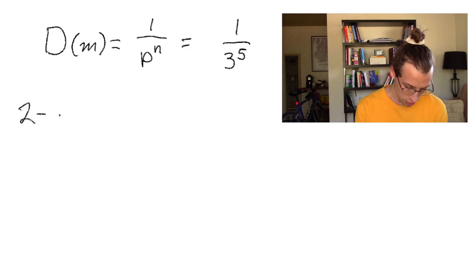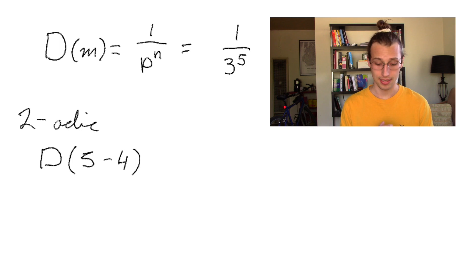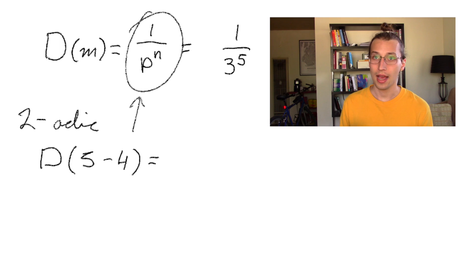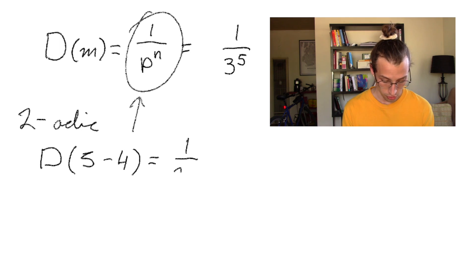So let's look at a 2-adic system and ask: what is the distance from 5 to 4? In a p-adic system, if you want to know the distance from one number to another number, what you do is first what you'd expect - you take the absolute value of the difference of those two numbers. But that's not your answer. In a p-adic system, what you would then do is plug that number into 1 over P to the N. So 5 minus 4 is 1. And now we need to ask ourselves, how many times does 2 go into 1? Because we're in a 2-adic system. Well, 2 goes into 1 zero times. So the distance from 5 to 4 in a 2-adic system is 1 over 2 to the 0, because 2 goes into 1 zero times.